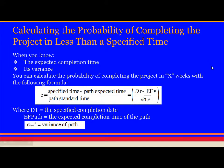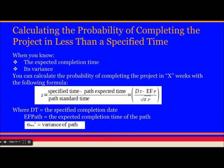Calculating the probability of completing the project in less than a specified time: whenever we need to do a project in less time — which is also known as crashing — before doing that we should calculate the probability to find out whether it will be successful. The method uses the Z score, calculated as: specified time minus path expected time, divided by path standard deviation. This is also denoted by this formula.